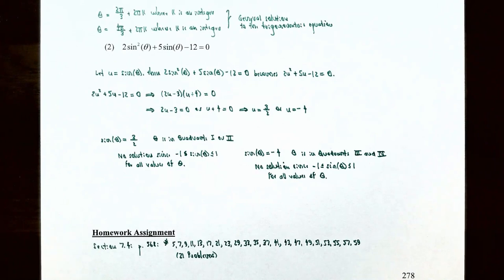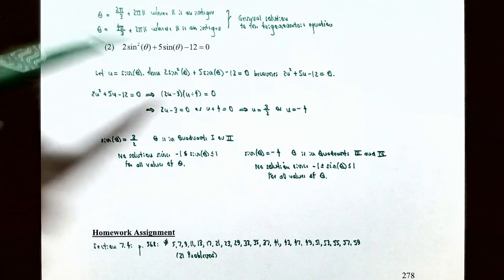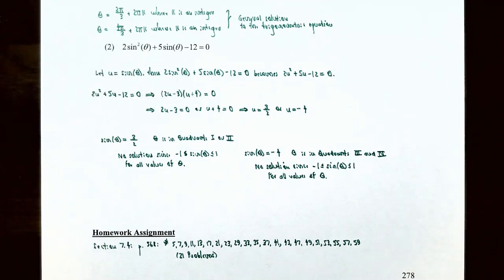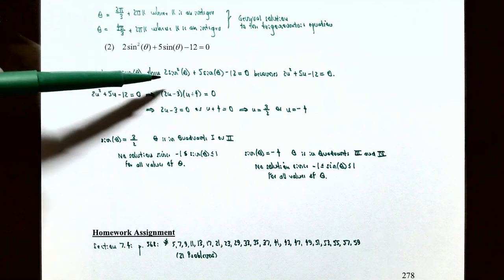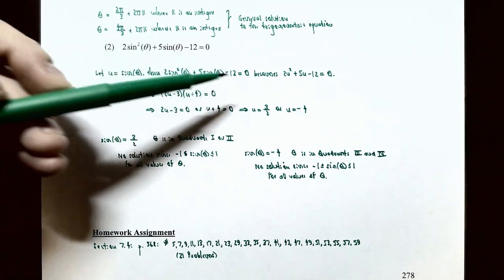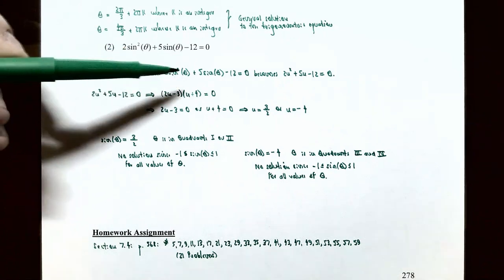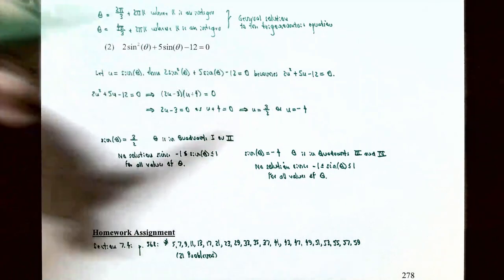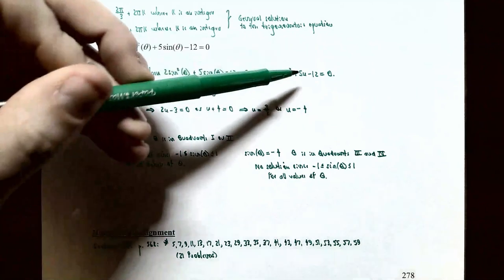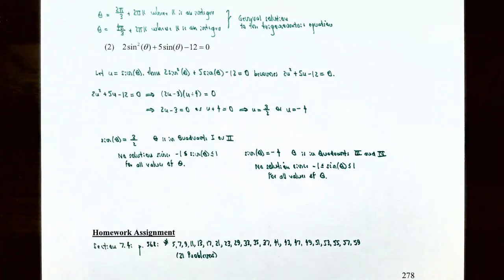Number two: solve 2sin²θ + 5sinθ − 12 = 0. Since we have sin²θ and sinθ, let u = sinθ. The equation becomes 2u² + 5u − 12 = 0. This is again a trigonometric equation of quadratic type that we'll solve as a quadratic equation.